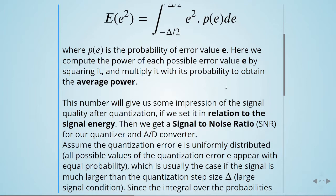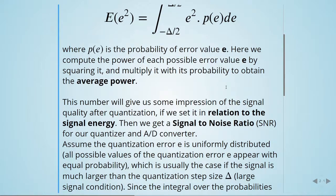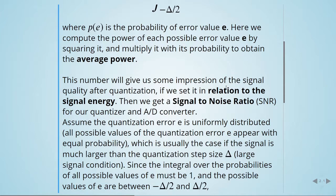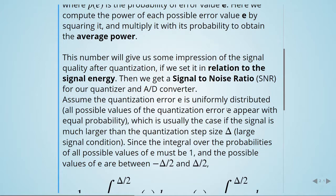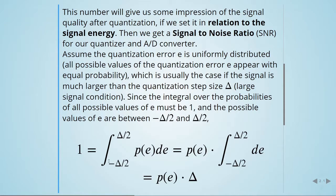The integral over the probabilities of all possible values of e must equal 1. The possible values of e are between -Δ/2 and Δ/2, where Δ is the step size.